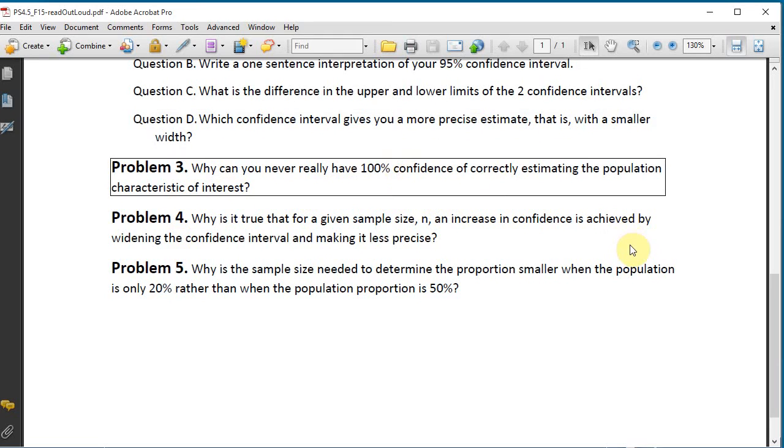Problem 3. Why can you never really have 100% confidence of correctly estimating the population characteristic of interest?